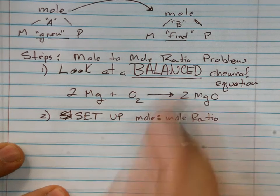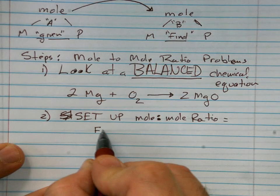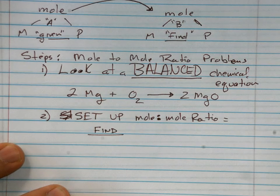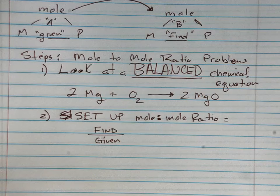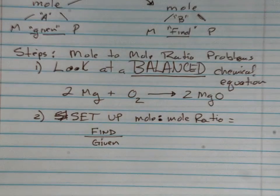When we do this ratio, we want what you're trying to find on the top. So we're going to put find equals find over given.